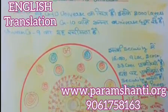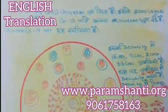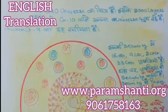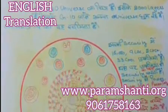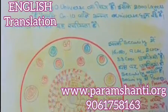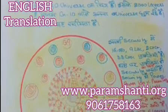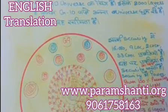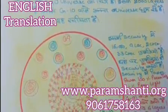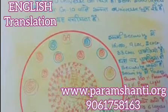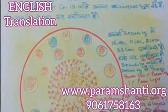In the G10 universe, there are an infinite number of G9s. This G10 has 2000 layers. These 2000 layers are from above G9. The creator of G10 is in the center point in incorporeal supreme light form.